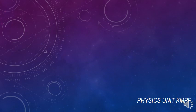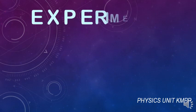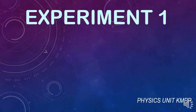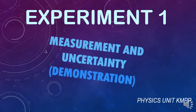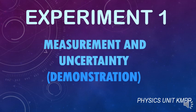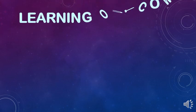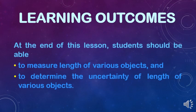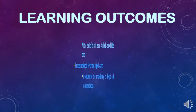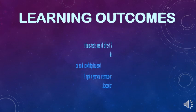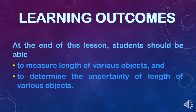Hi everyone, I am Madam Leung. I'm glad to be here to demonstrate to you how to carry out Experiment 1. The title for this experiment is Measurement and Uncertainty. The learning outcomes of this experiment are to measure the length of various objects and to determine the uncertainty of the length of various objects.